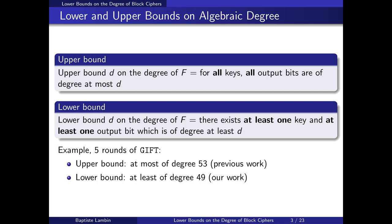If we want to show some upper bounds d on the degree of the function, then we need to show that for all keys, all output bits are of degree at most d. On the other hand, if we want to show some lower bounds on the degree, we just need to show that there is at least one key and at least one output bit which is of degree at least d.